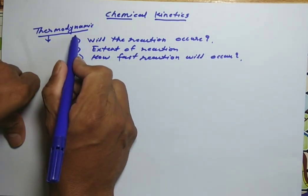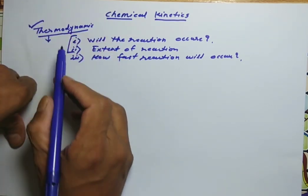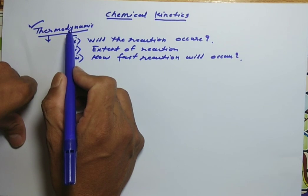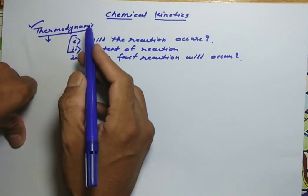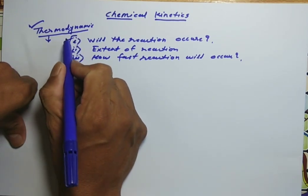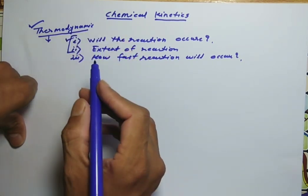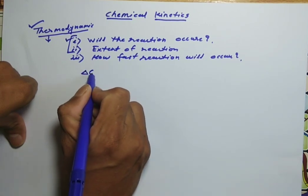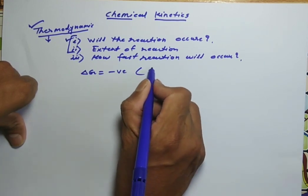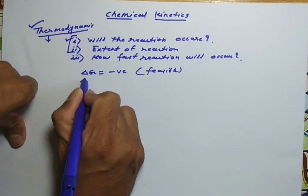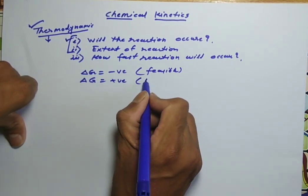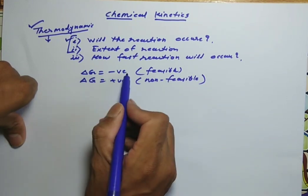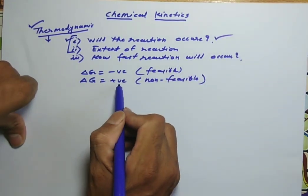These first two things are already explained by the branch called thermodynamics. Thermodynamics is the branch of chemistry which deals with various transformations taking place during chemical or physical processes. The answer to whether the reaction will occur or not is given by thermodynamics by considering the energy parameter called Gibbs free energy, G. If delta G is negative, the reaction is feasible and occurs.